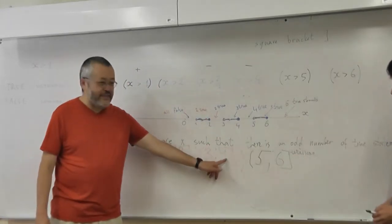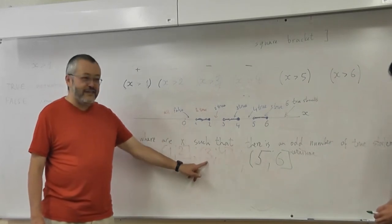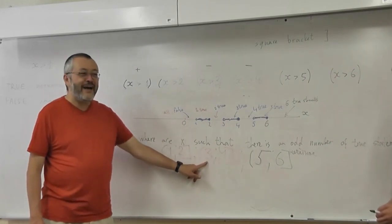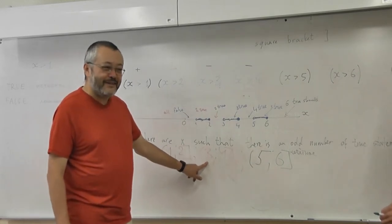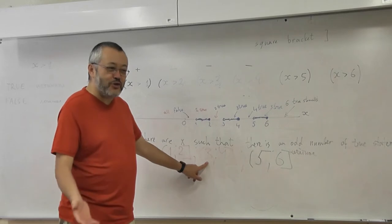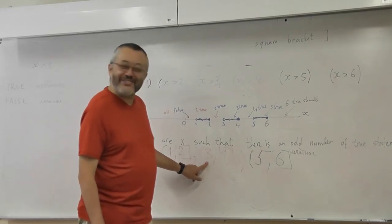So we have different signs. We have parentheses on the left and square brackets on the right. Square bracket is including one. So this means that four is included and three is... is what? Not. How do you say in English if something is not included?